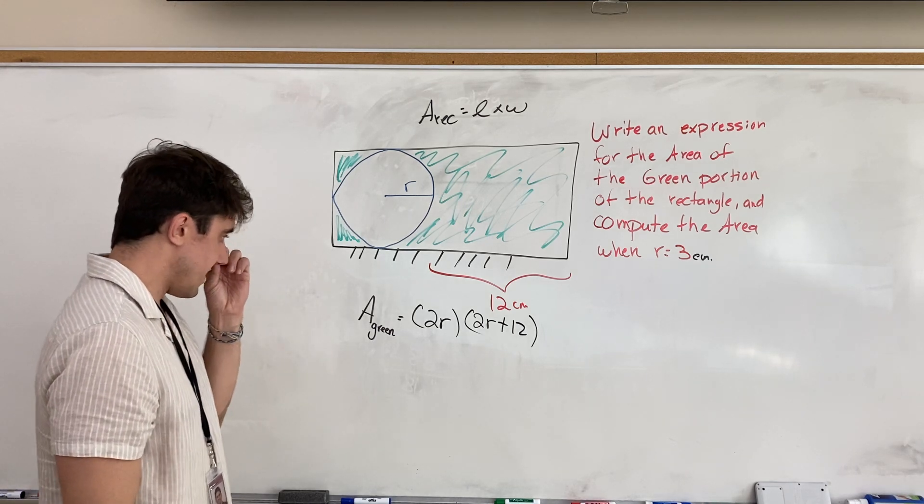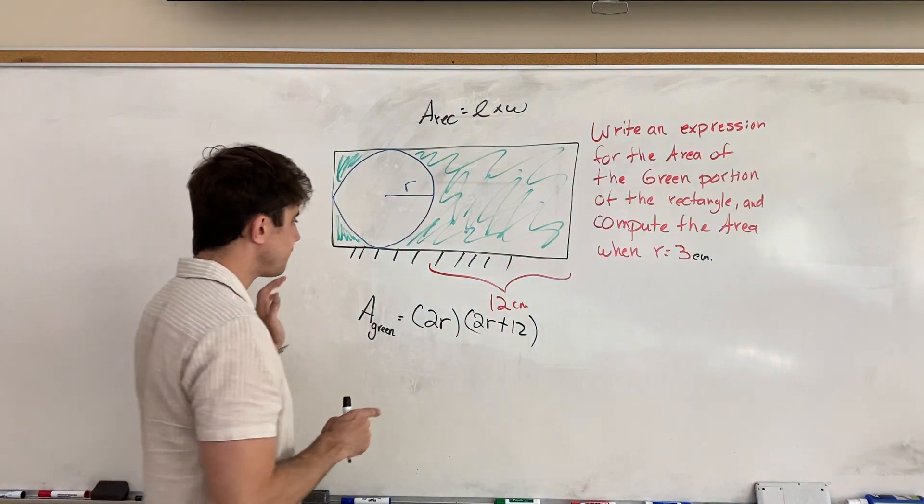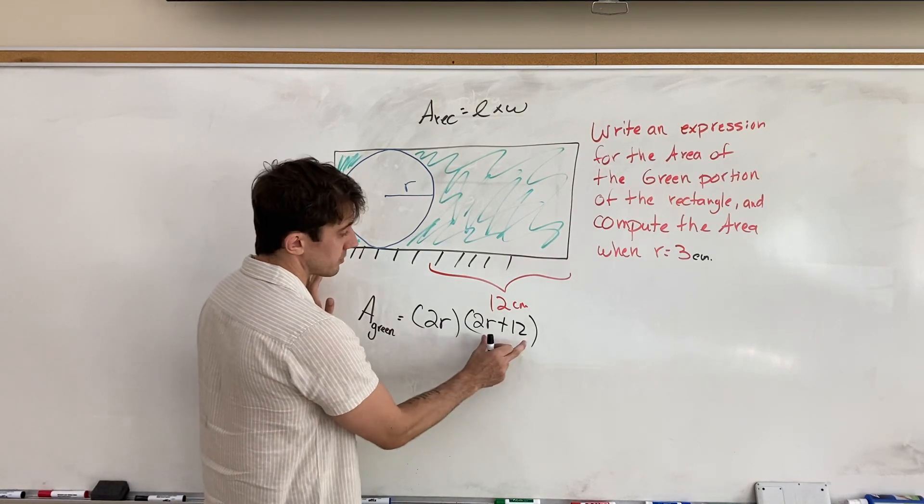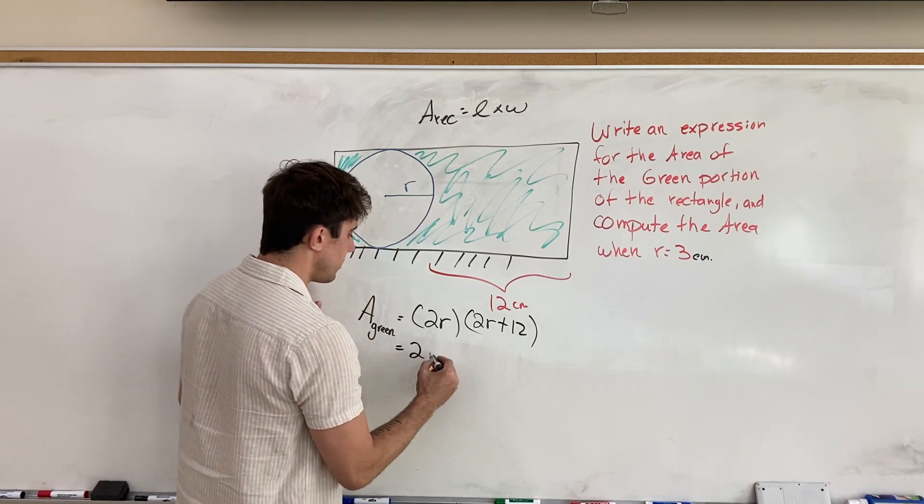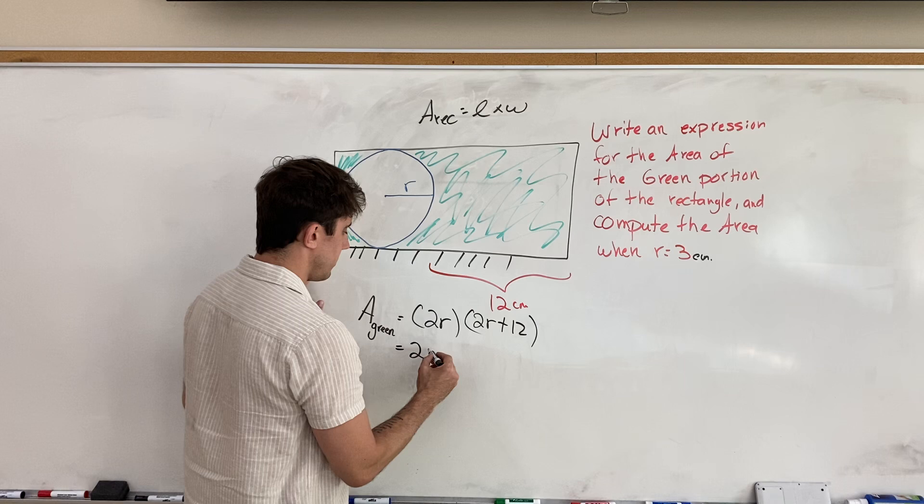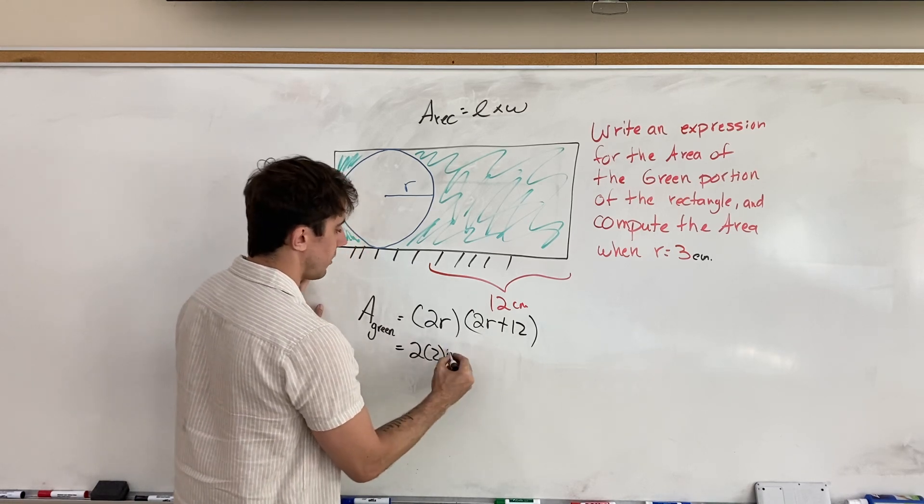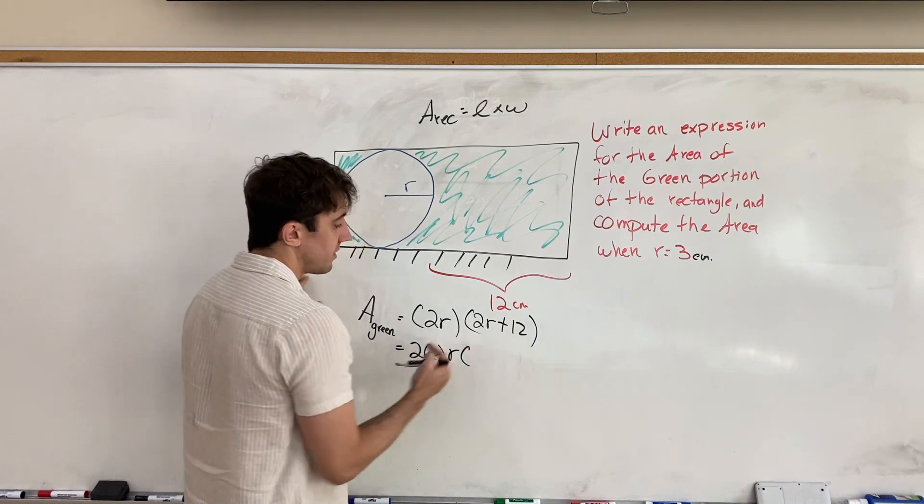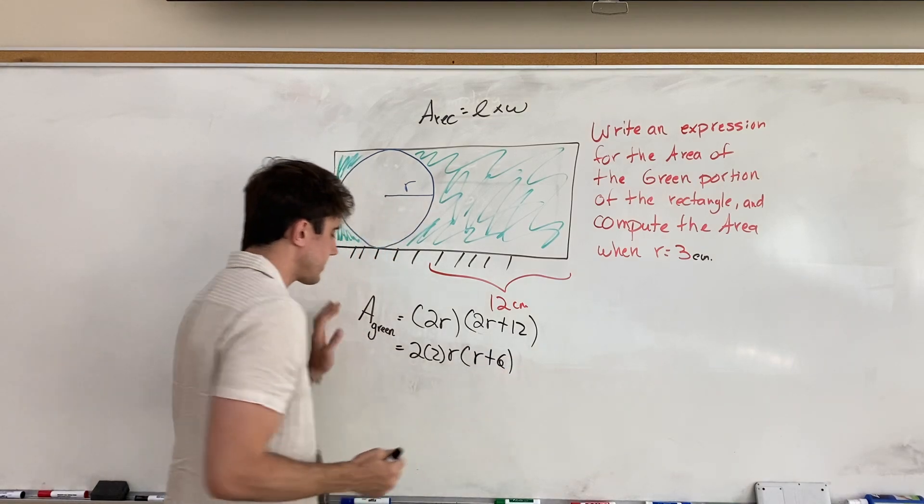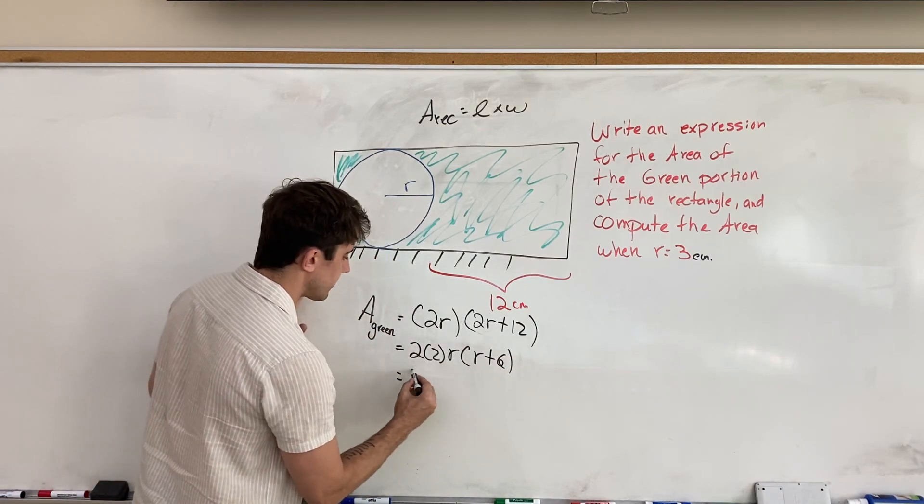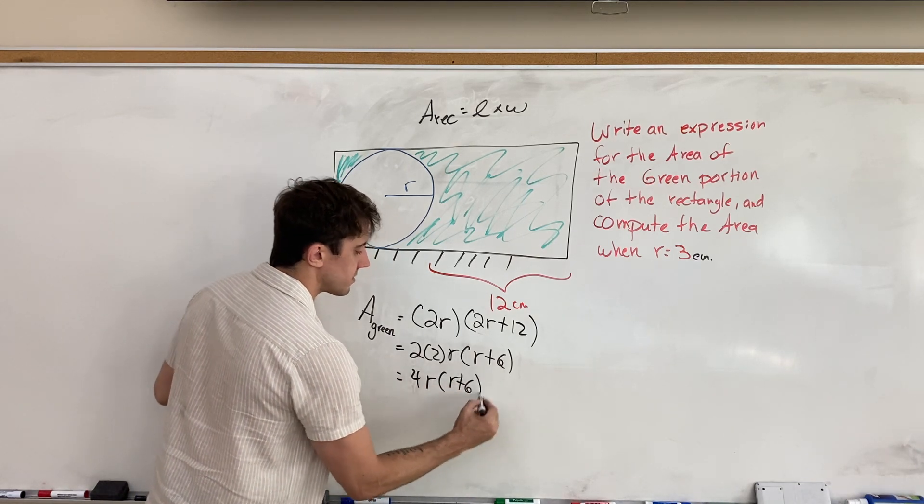And now there's a bit of work we can do with this. To simplify it, maybe what I would do is we can factor out a 2 from this one, and we can factor out a 2 from this one. And so what I might do is write this as 2 from this one and 2 from this one. So 2 times 2 times. Now I'll just have r, and here I'll have, if I factored a 2 from 2r plus 12, I'm left with r plus 6, and now 2 times 2, of course, is 4r times r plus 6.